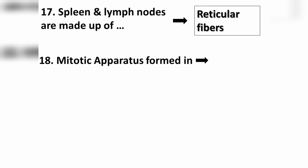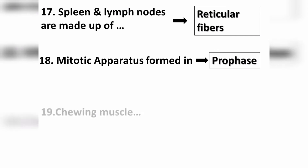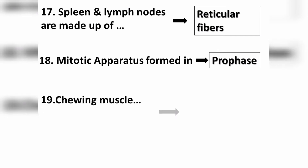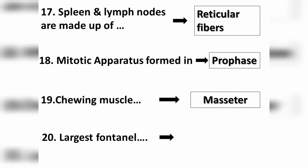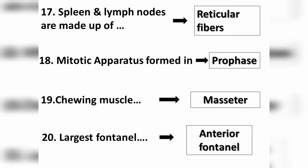Question number eighteen: the mitotic apparatus is formed during prophase. Question number nineteen: the chewing muscle is also called the masseter muscle. Question number twenty: the largest fontanel in an infant is the anterior fontanel.